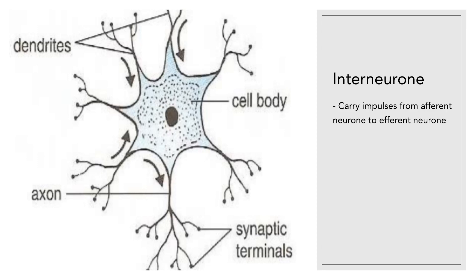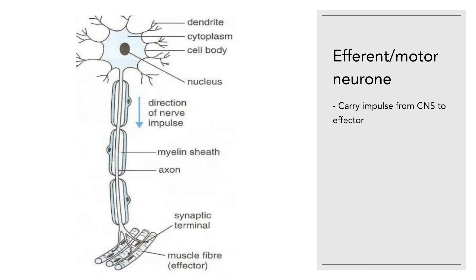Interneuron. Its function is to carry impulses from the afferent neuron to the efferent neuron. Efferent or motor neuron. Its function is to carry impulses from the central nervous system to the effector.